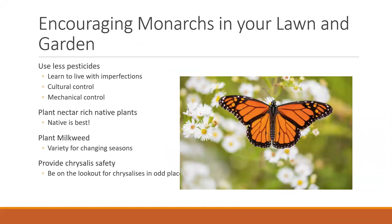In overview: we want to use less pesticides to benefit our pollinators, learn to live with imperfection, and use cultural and mechanical controls on insects we don't want. Plant nectar-rich native plants — native plants are always best, best suited for our habitat and most familiar to our native species. Make sure to plant milkweed so caterpillars have plenty of food, and plant a variety so changing seasons don't deter monarchs from laying eggs in our area. Provide chrysalis safety — be on the lookout for chrysalises in odd places and make sure you move them somewhere safe.